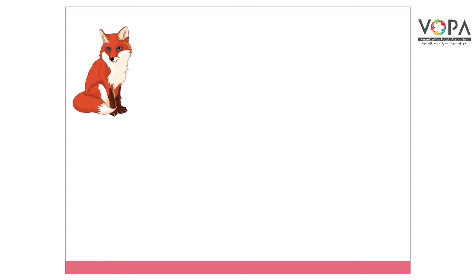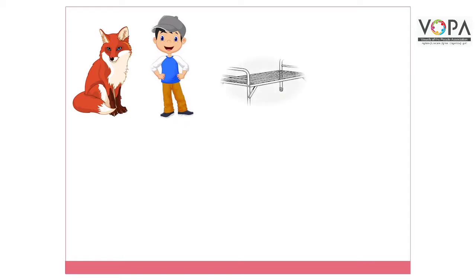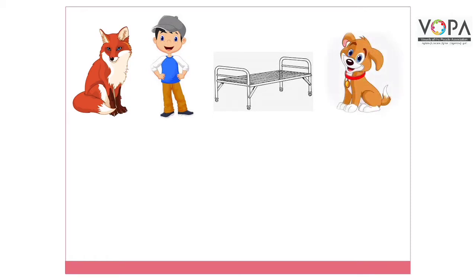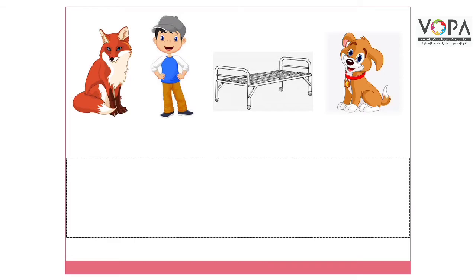The pictures are: fox — क्या है बच्चों ये fox? Boy, caught, dog. अब बच्चों आपने इन तसावीर को देखा है ना? अब इन तसावीर के जो नाम हैं, इनके first letter missing हैं, तो आपको उन्हें लिखना है।